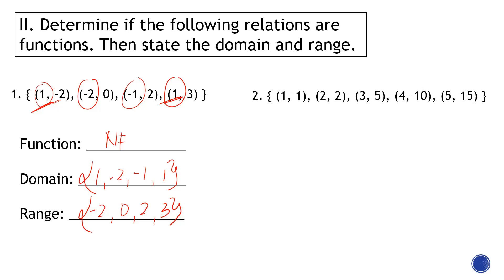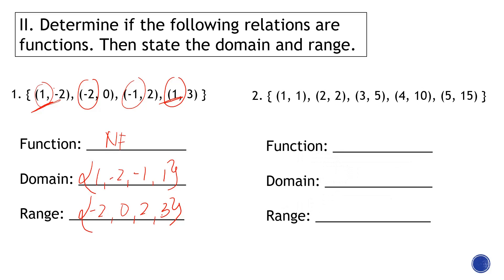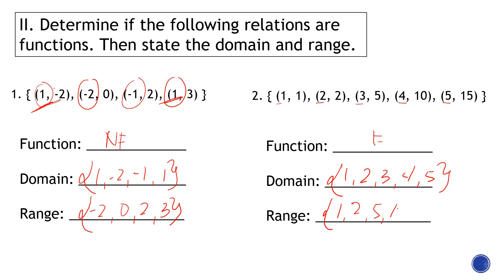For the next example, we check the x-coordinates: 1, 2, 3, 4, and 5 — they are all different, so this is a function. Therefore, our domain is {1, 2, 3, 4, 5} and our range consists of the y values: 1, 2, 5, 10, and 15.